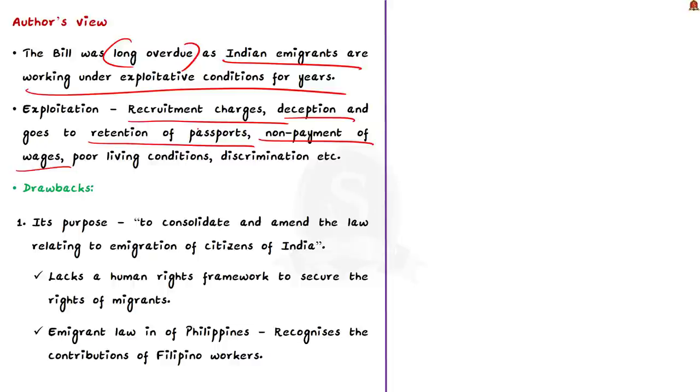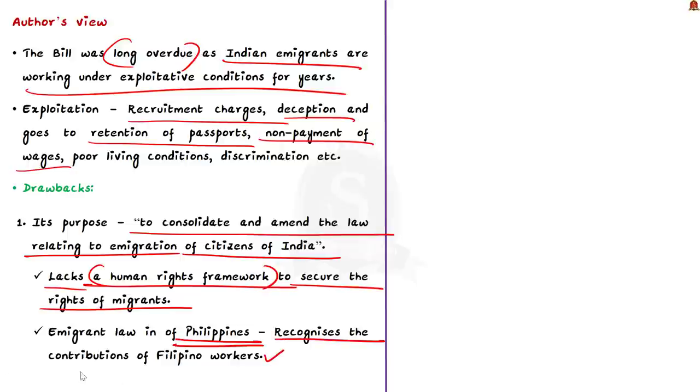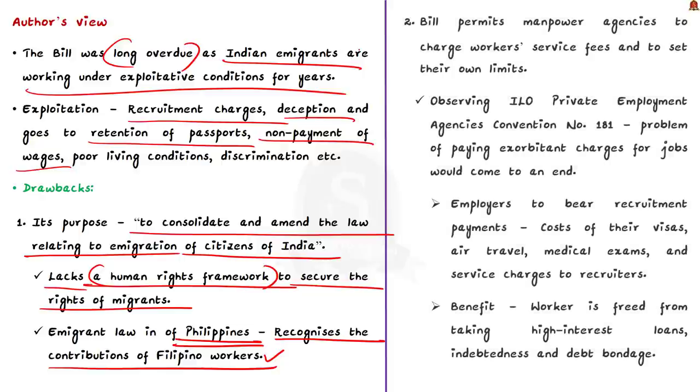Firstly author criticizes the purpose of this bill. According to the bill, the purpose is to consolidate and amend the law relating to immigration of citizens of India. Author feels that this lacks a human rights framework to secure the rights of migrants and their families. Other countries are moving in the right direction. For example, if you take the Philippines and its immigrant law, it explicitly recognizes the contribution of Filipino workers and tries to ensure dignity and fundamental human rights and freedoms of Filipino citizens. It takes care of both workers and also their citizens. But this aspect does not exist in the proposed bill.